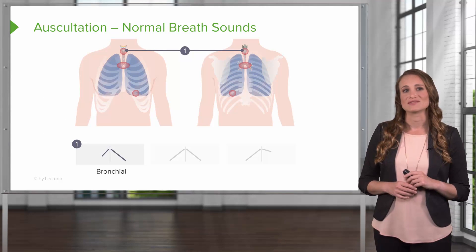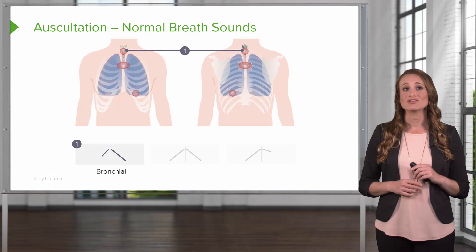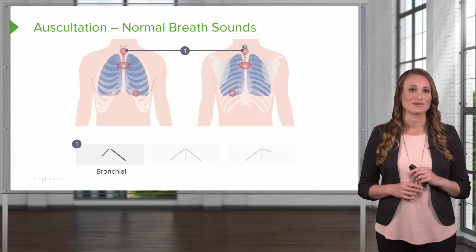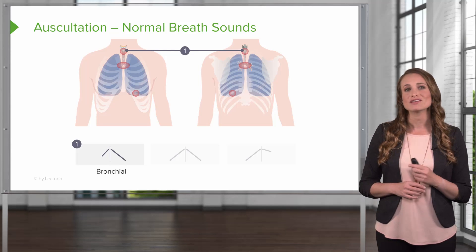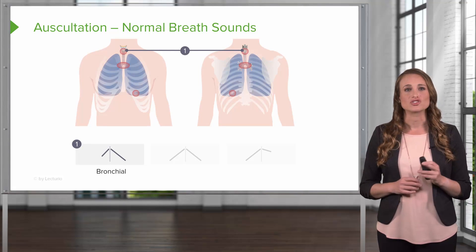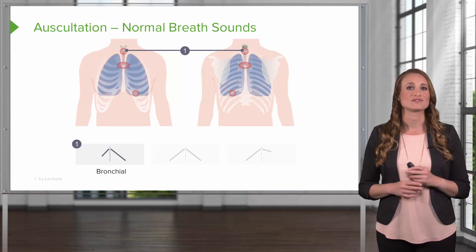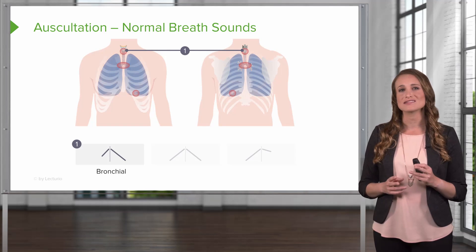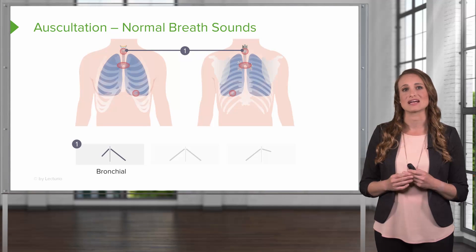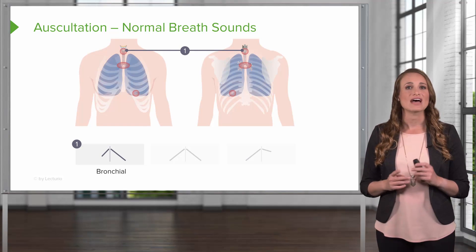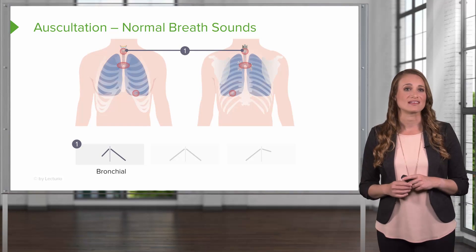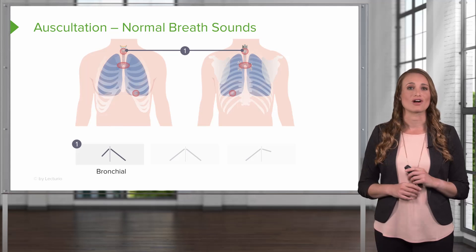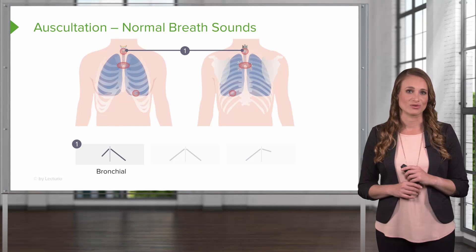The normal breath sounds are bronchial, bronchovesicular, and vesicular. The bronchial sounds are a tubular and hollow sound heard over the trachea, and sometimes the mediastinum. The expiratory phase in bronchial sounds is slightly longer than the inspiratory phase.